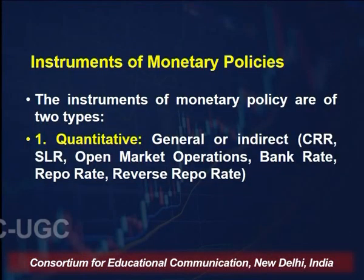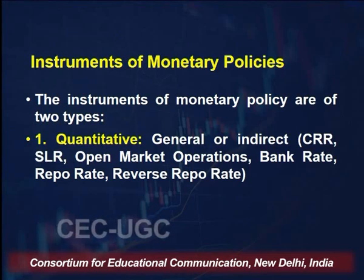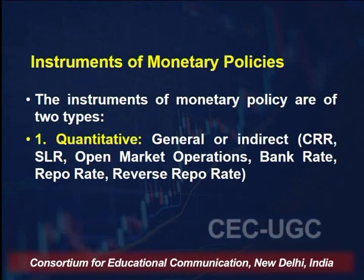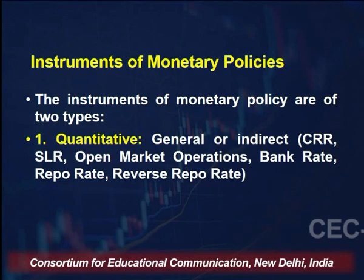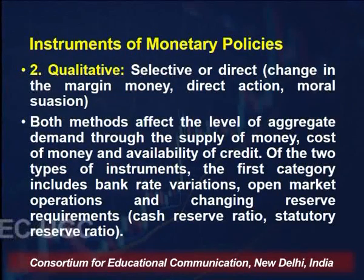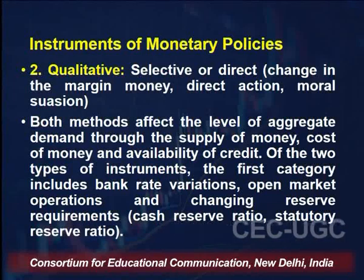Instruments of monetary policy are also called weapons of monetary policy because through them, money supply and cost of money in the economy are controlled. In summary, instruments are of two types: quantitative (or general/direct) — such as CRR, SLR, open market operations, bank rate, repo rate, and reverse repo rate — and qualitative (selective or indirect) — such as changes in margin requirements, direct action, and moral suasion.